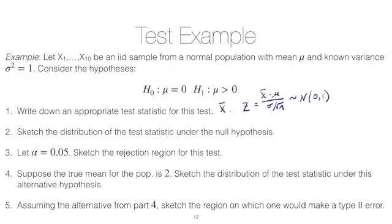So for question number 3, if we fix alpha, the size of the test, to be 5%, let's try to sketch the rejection region for the test.